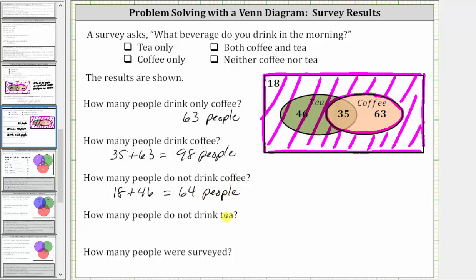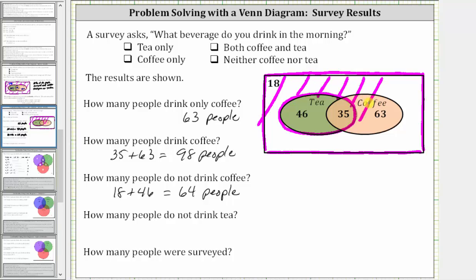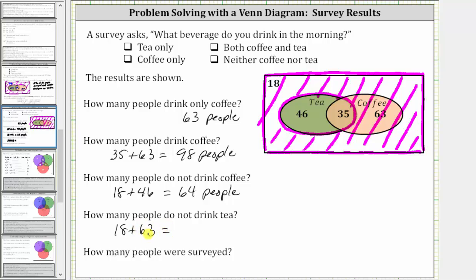Next, how many people do not drink tea? That is the set outside the set of people that drink tea. Here we have the tea drinkers, and therefore the set of people that don't drink tea is this set here. The number of people that do not drink tea is equal to 18 plus 63, which is equal to 81 people.